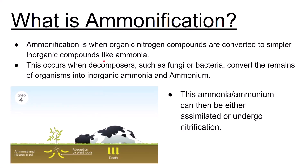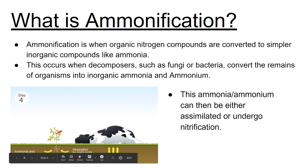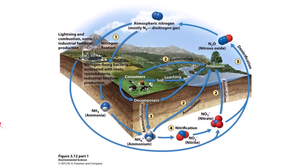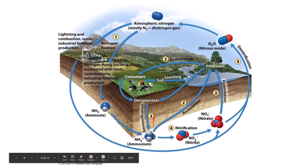Ammonification is when organic nitrogen compounds are converted to simpler inorganic compounds like ammonium. Decomposers such as fungi and bacteria convert the remains of organisms into inorganic ammonia and ammonium. This ammonia or ammonium can then either be assimilated or undergo nitrification. After a consumer like a cow dies, that nitrogen is broken down by decomposers and put back into the ground.